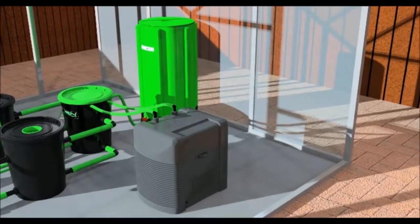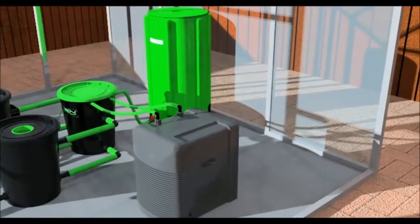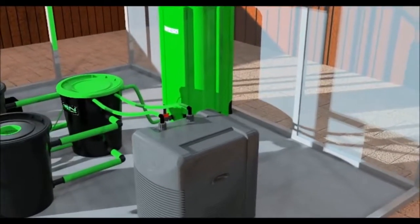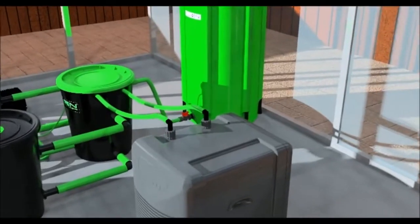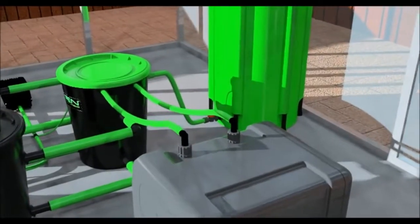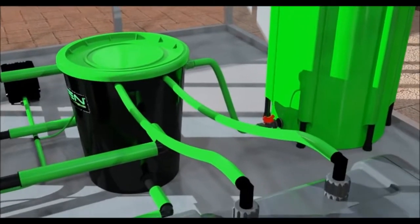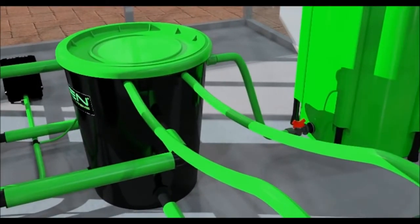Drill two 26mm holes either in the lid or on the side of the header pot as high up as possible. For chillers up to 300 litres, 16mm alien green pipe is used to connect the chiller to the system. For chillers 300 litres and above, 19mm alien green pipe is used.